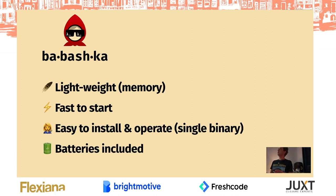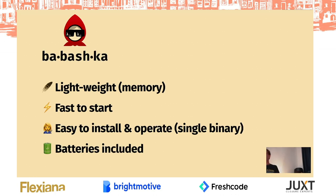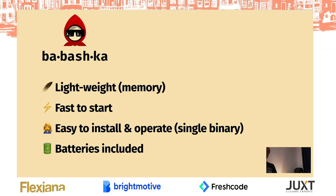What is it about Babashka that makes it a relatively popular tool for scripting in Clojure? I think a few of the aspects are: it's lightweight, as in it consumes not a lot of memory. It's similar to Bash for scripting — it's lightweight and it starts fast like Bash. It's easy to install — you just download a single binary and you can run it, and that's it. It also comes with batteries included, with like 80% of what you need for scripting already there most of the time.